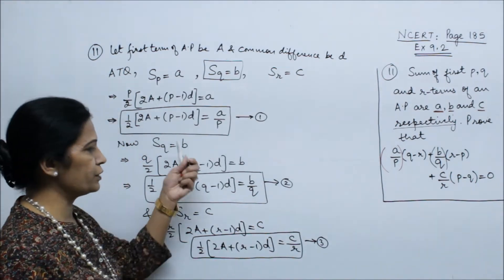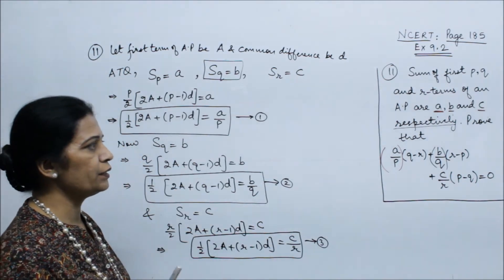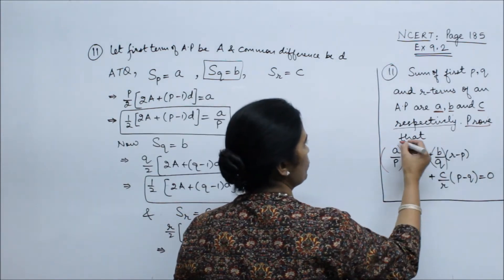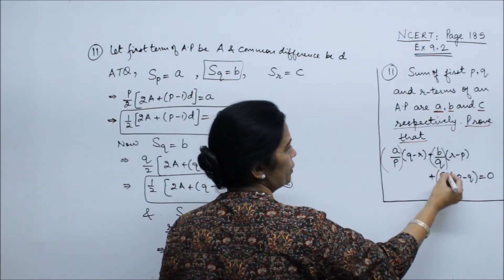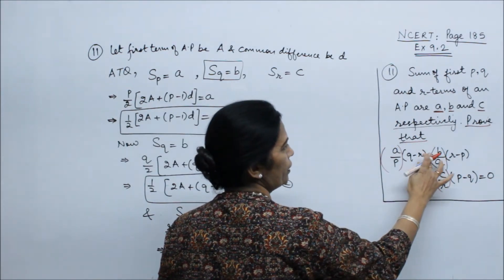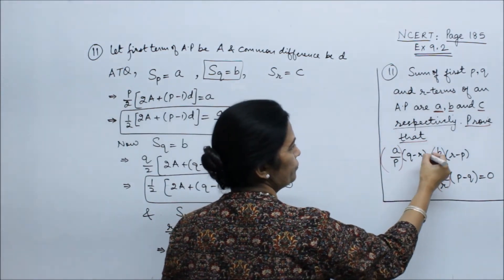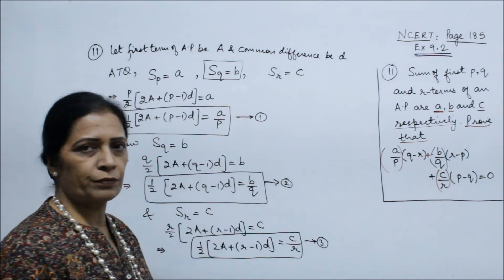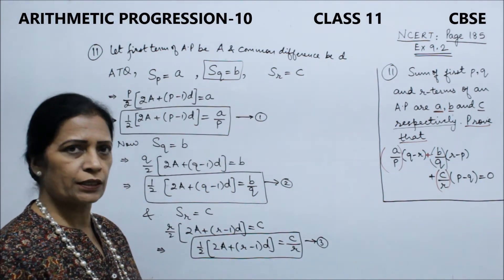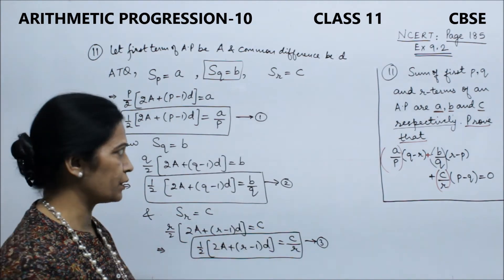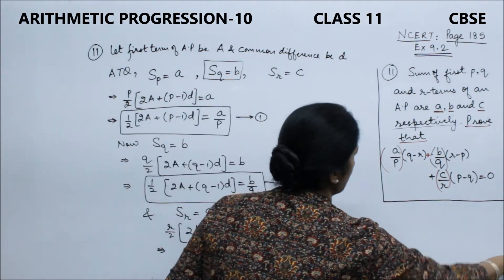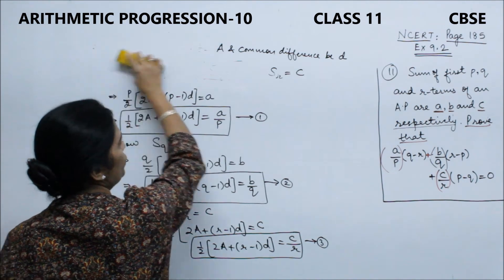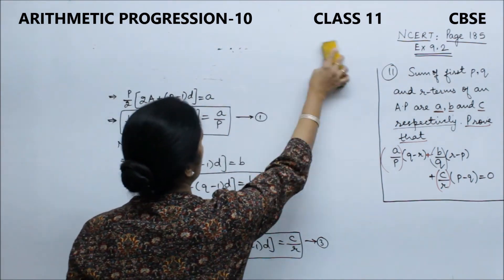These are our first, second, and third equations. Now we need to substitute all these values into the expression we have to prove, replacing A/P, B/Q, and C/R. Let's start with the left-hand side of the expression.